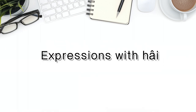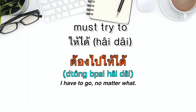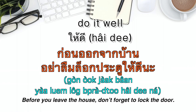There are also common expressions using ให้. The phrase ให้ได้ (hai dai) means 'must try to' or 'no matter what.' For example: ต้องไปให้ได้ — 'I have to go no matter what.' Add ให้ได้ at the end. Another expression is ให้ดี (hai dee), meaning 'do it well.' For example: ก่อนออกจากบ้าน อย่าลืมล็อคประตูให้ดีนะ — 'Before you leave the house, don't forget to lock the door properly.'